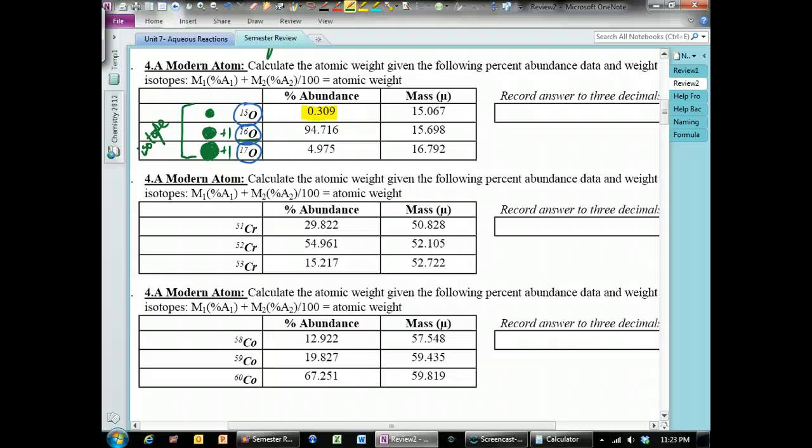So, to figure out our average weight, we take the weight of the oxygen, which in this case, we know it down to more significant figures or more decimal points, is 15.067. That's the mass of oxygen 15. And we have 0.309% of all isotopes are oxygen 15. So, we multiply this by 0.309.